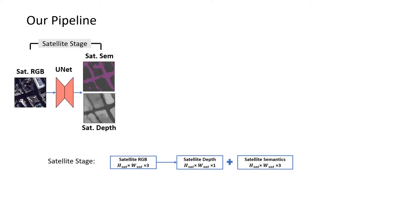In this work, we propose to solve this problem using a three-stage pipeline. For the satellite stage, we estimate depth and semantic images from the input satellite image via UNET.